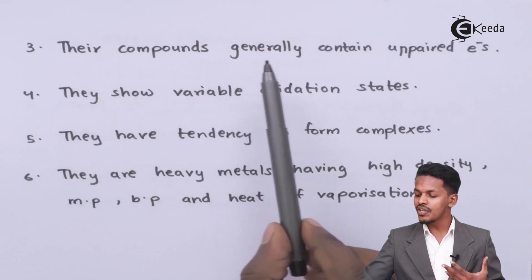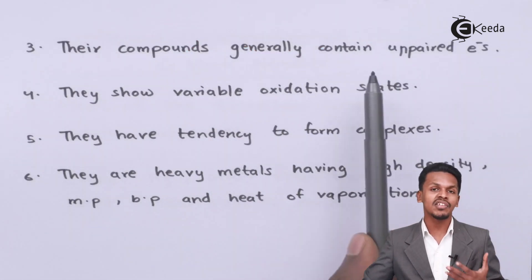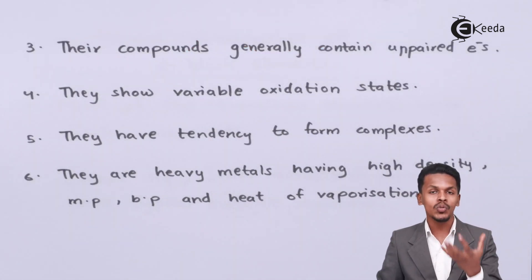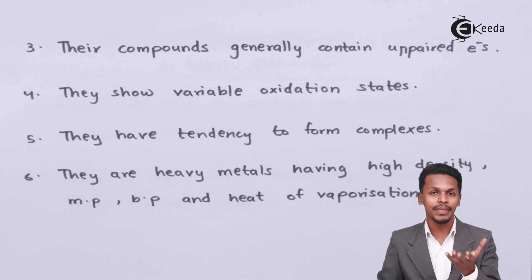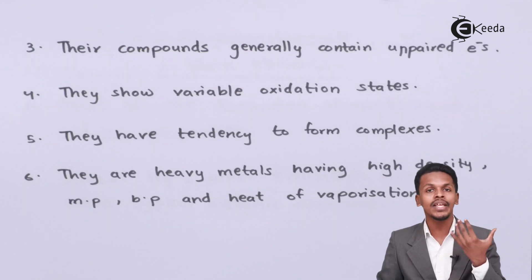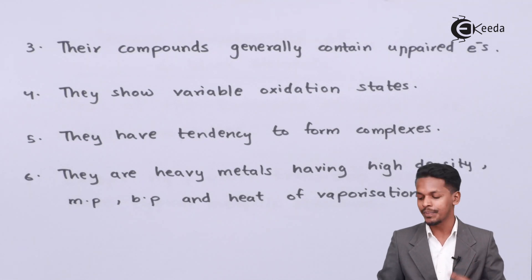Their compounds generally contain unpaired electrons, and that's the reason those compounds are basically paramagnetic in nature. If we have more unpaired electrons, the compound will be more paramagnetic in nature.